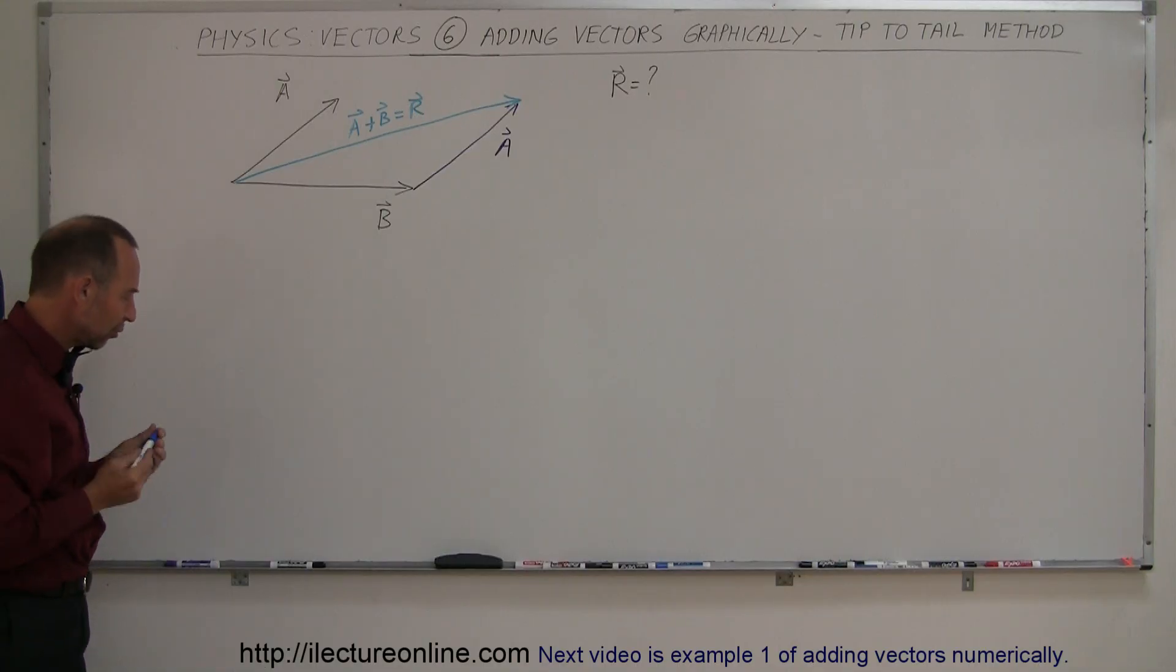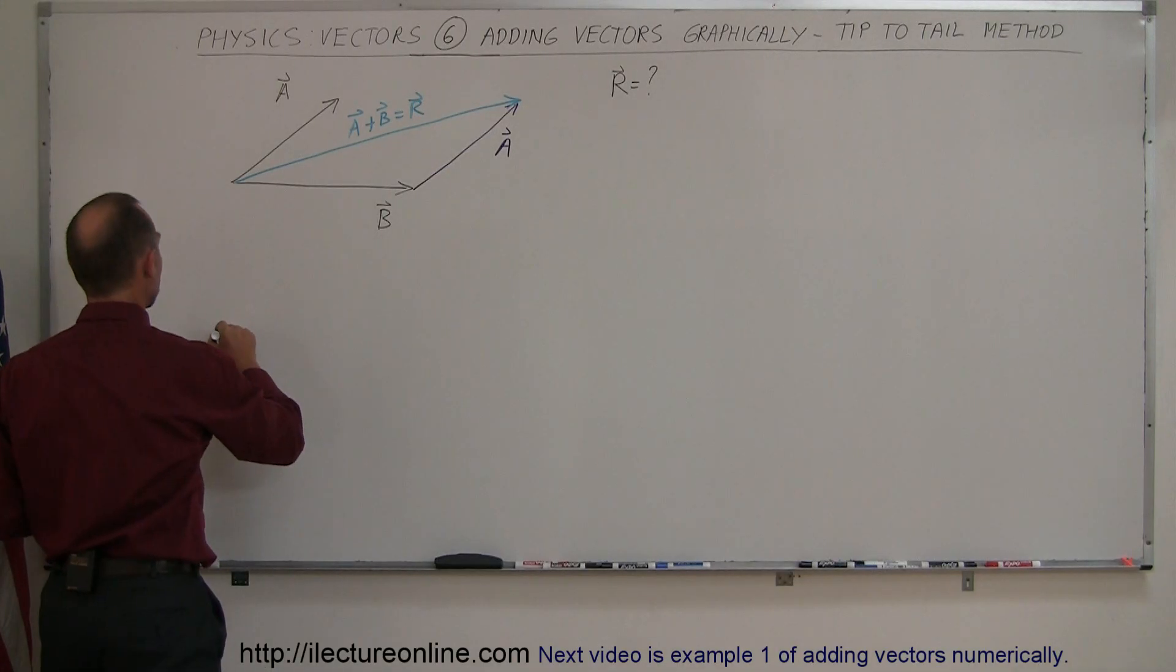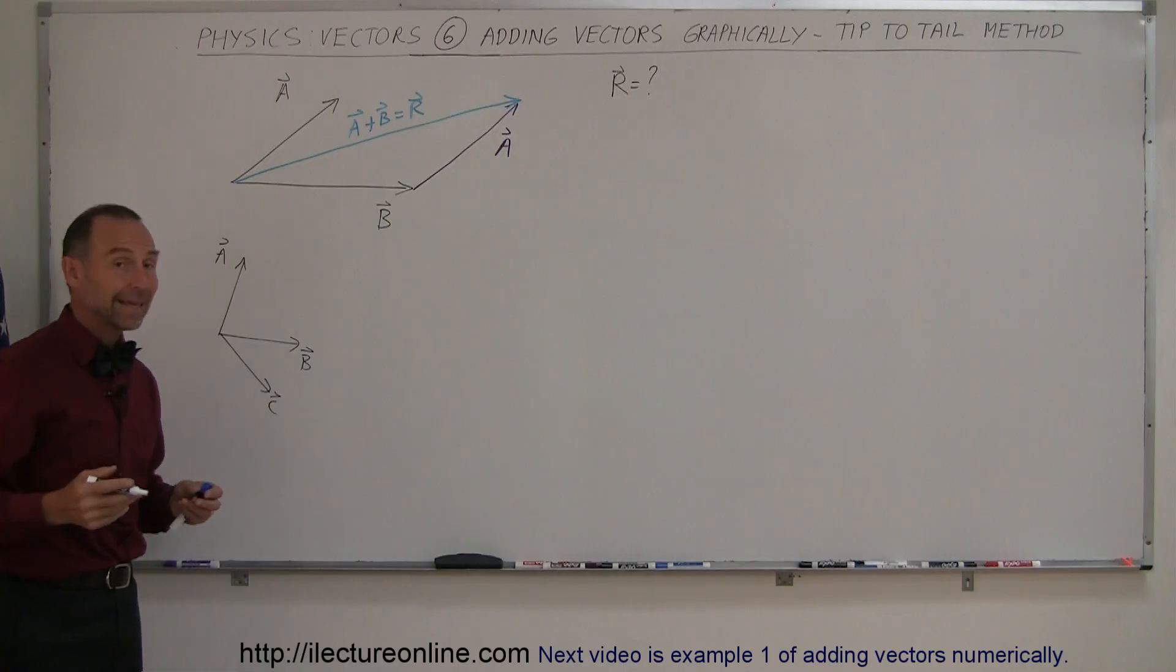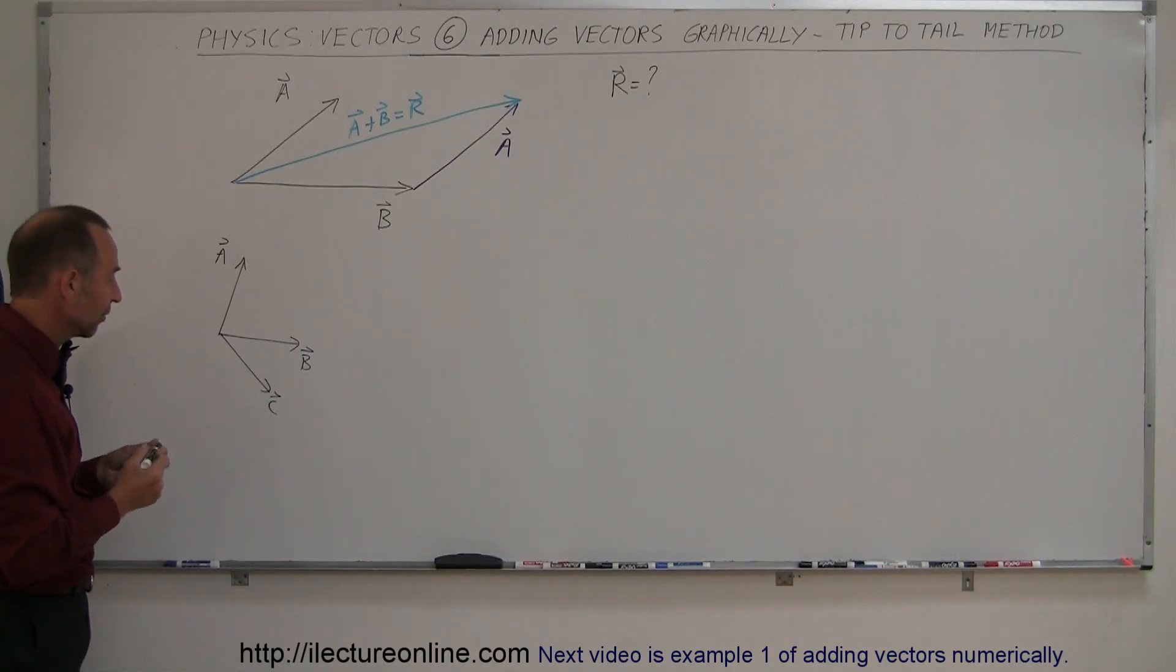Now that's kind of a neat method because what if you have three vectors or four vectors? Let's say we have vector A in this direction right there. Let's say we have vector B in this direction. And let's say we have vector C in this direction. And now you want to add those three together and find the sum of the vectors or the resultant vectors.